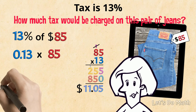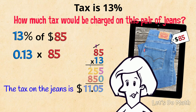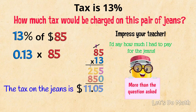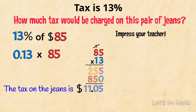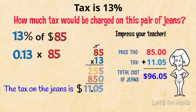When I'm answering a word problem I like to make it crystal clear, so I write a sentence: 'The tax on the jeans is $11.05.' And if I really want to impress my teacher, I would then say how much I had to pay for the jeans — this is more than the question asked, so expect extra kudos or marks for extra work. Price tag $85 plus tax $11.05 adds up to a total cost of $96.05.